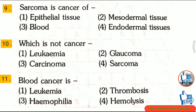Question 9: Sarcoma is cancer of — first, epithelial tissue; second, mesodermal tissue; third, blood; fourth, ectodermal tissue. The correct answer is option 2: mesodermal tissue.